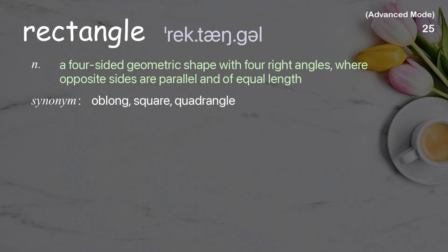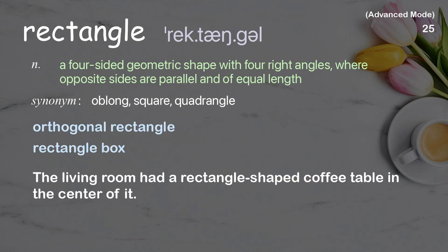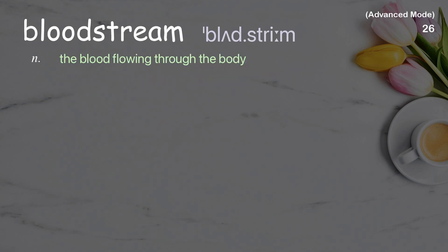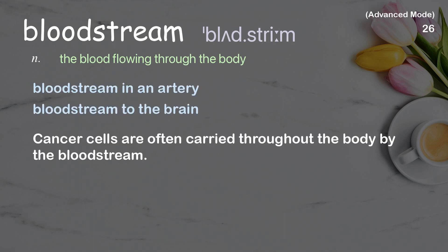Rectangle: A four-sided geometric shape with four right angles, where opposite sides are parallel and of equal length. Example: The living room had a rectangle-shaped coffee table in the center of it.